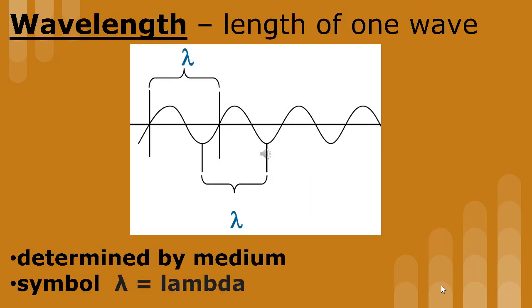The wavelength of a wave is determined by the medium through which it travels. The symbol for wavelength is the Greek letter called lambda.